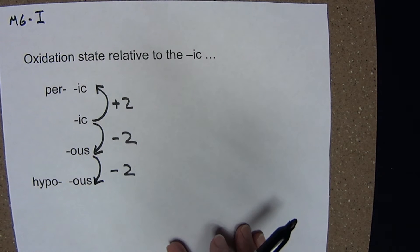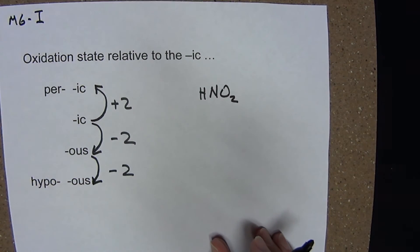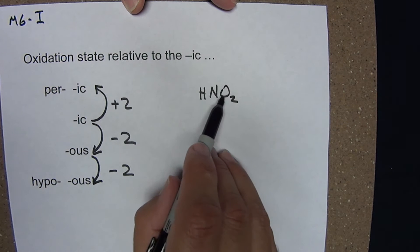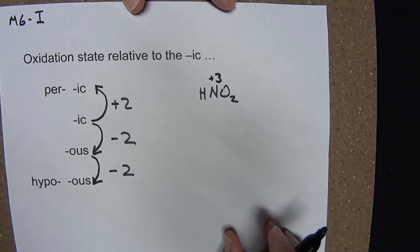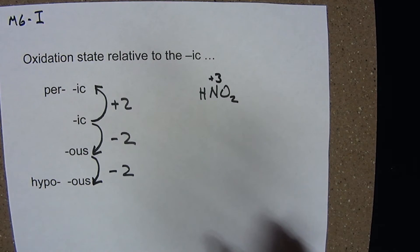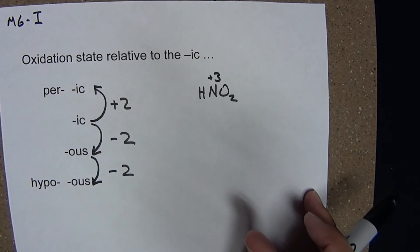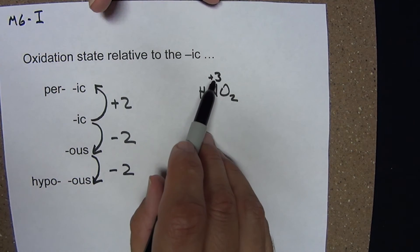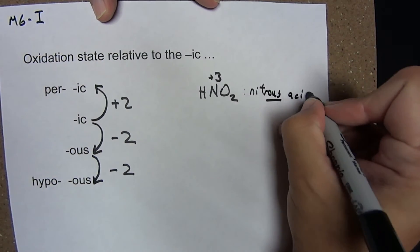Let's practice using some of these rules with made-up oxoacids. First, we identify the oxidation state of nitrogen: hydrogen is plus 1, each oxygen is minus 2 for a total of minus 4, so the oxidation state of nitrogen must be plus 3. Nitrogen is in group 5, and the ic acid has an oxidation state of plus 5. I'm 2 less than the ic, which makes this the -ous acid. This is nitrous acid.